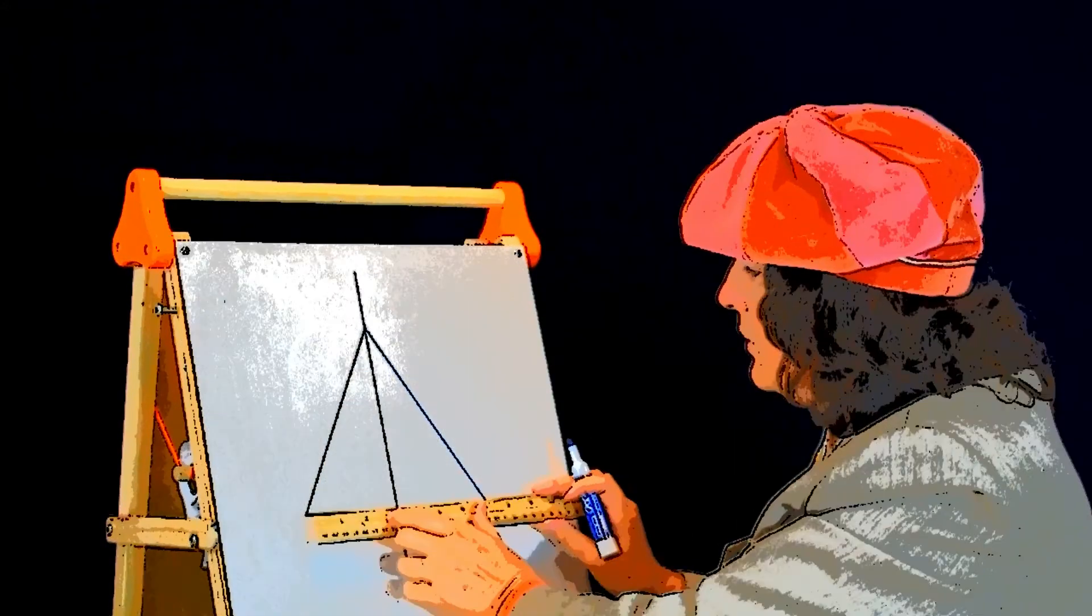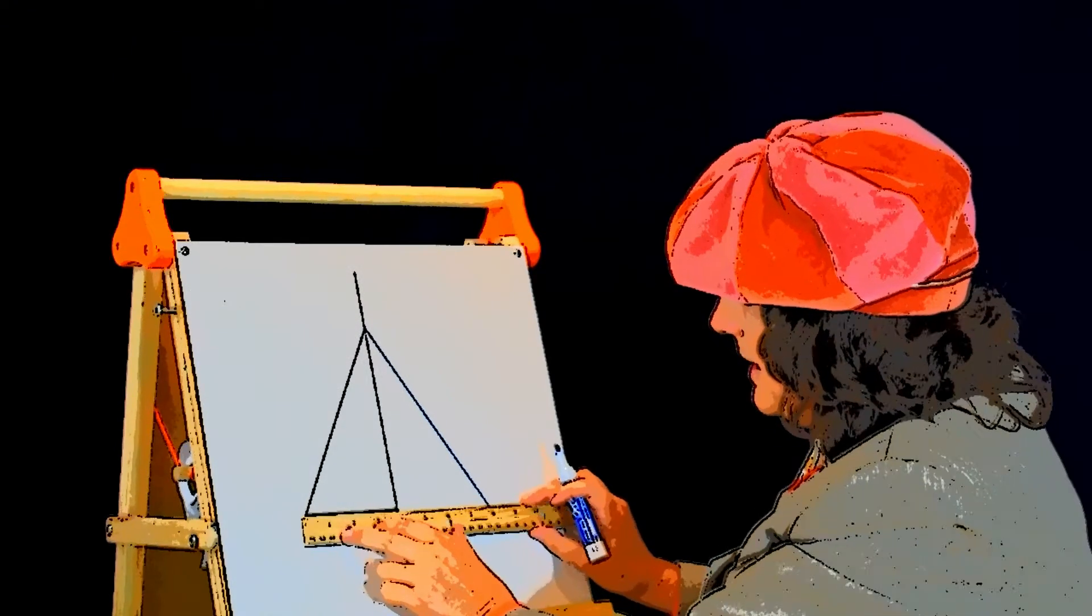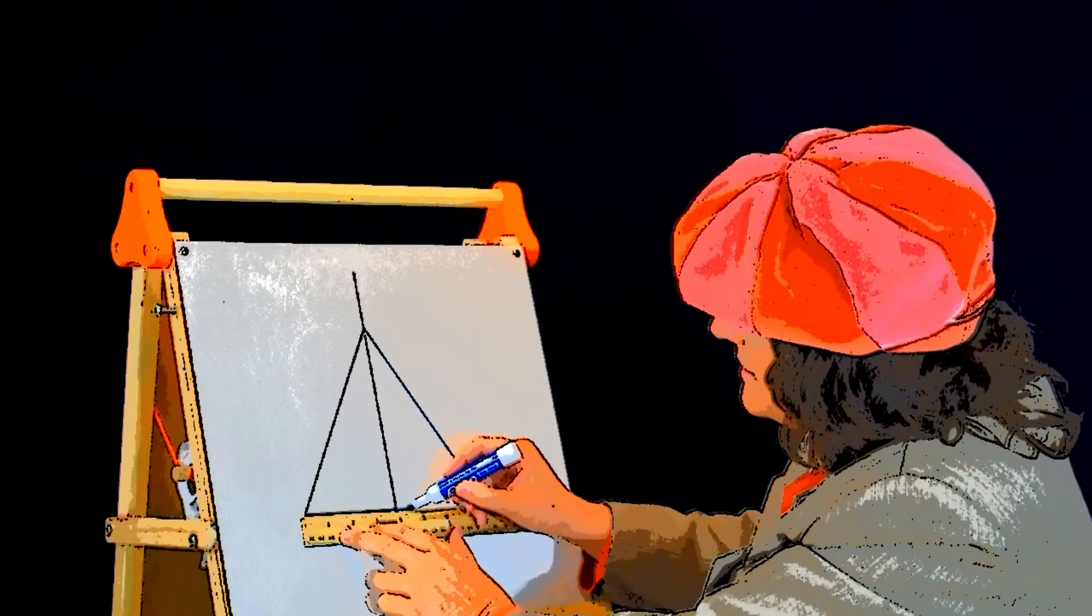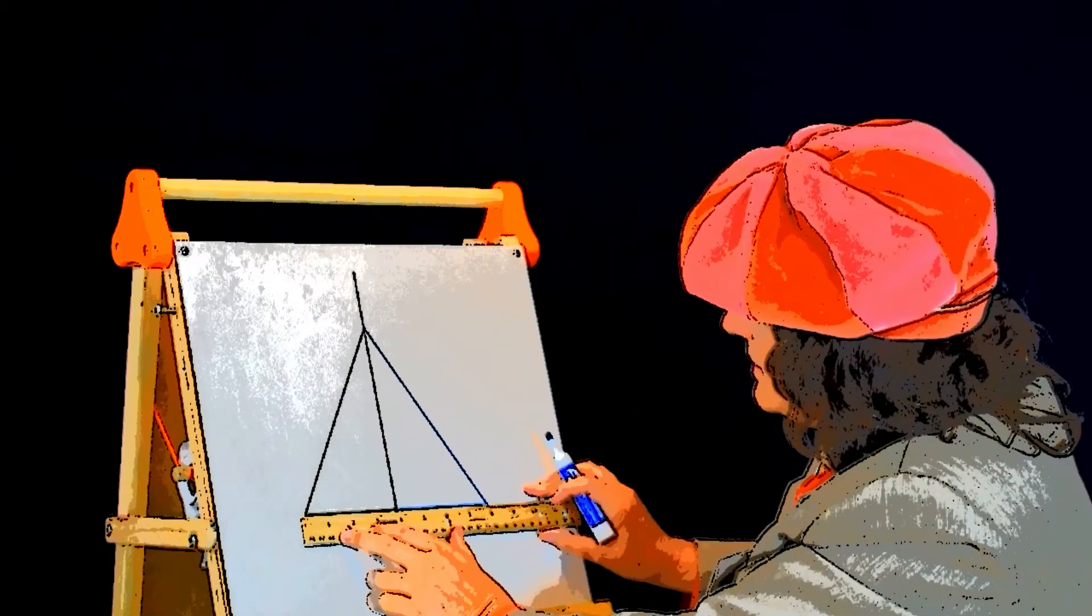Once again, I went too far, but that is okay. We can always erase. Then, I put my ruler below. I start at the dot in the center. I go the opposite direction of the line I just drew.